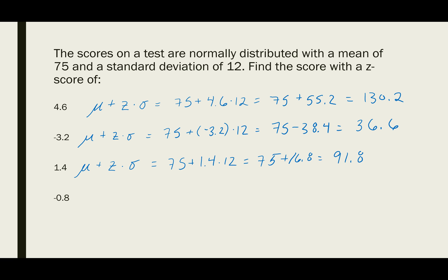The last one is negative 0.8. We're looking for the data value that's 0.8 standard deviations below the mean. That's 75 plus negative 0.8 times 12. 0.8 times 12 equals 9.6, and 75 minus 9.6 equals 65.4. The data value that is 0.8 standard deviations below the mean is 65.4.